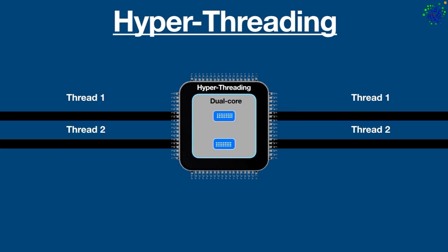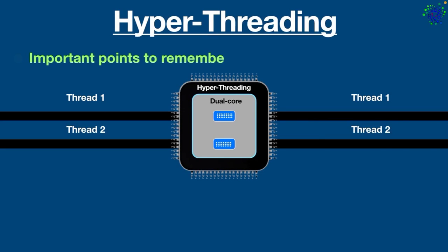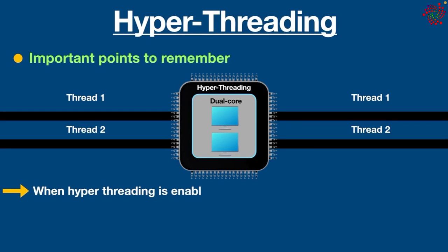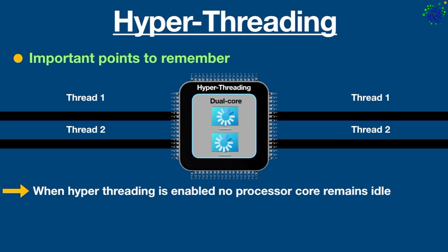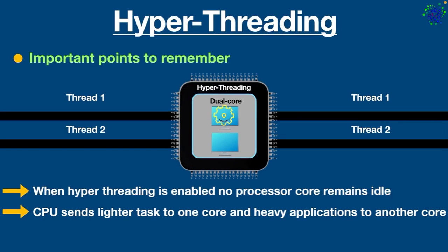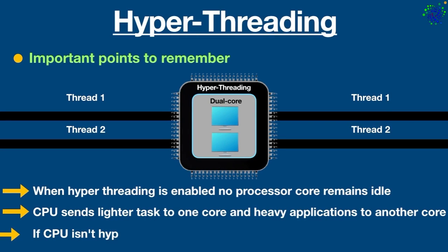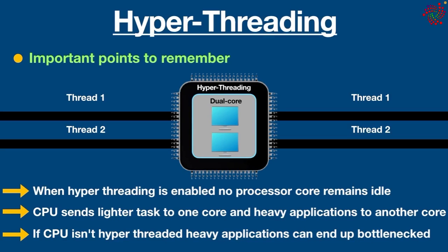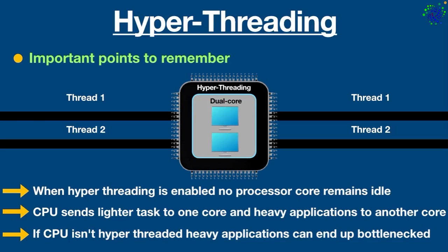In such cases, the workload gets broken down into software threads that the operating system can assign to the hardware threads and execute them at the same time. When hyper-threading is enabled, no processor core remains idle, and by taking advantage of idle time, the computer runs faster and more smoothly. Hyper-threading is also useful when you want your CPU to send lighter tasks like background apps to one core while heavy applications like games and videos are sent to another core. If your CPU is not hyper-threaded, heavy applications can end up bottlenecked, leading to slowdown and lag.